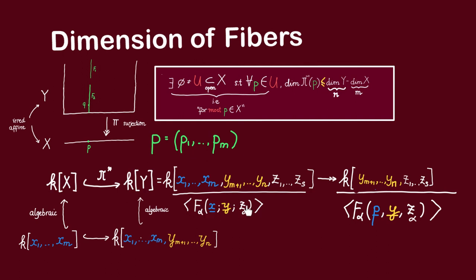For each z_alpha, we have an algebraic dependence relation relating z_alpha to the x_i's and y_j's. The problem is that when we plug in the point (p_1, …, p_m), this might no longer be a dependence relation between the y_j's and z_alpha — for example, if all the coefficients involving y_j cancel, leaving an expression containing only z_alpha. Note that since the y_j's are algebraically independent, we cannot have the other possibility where the coefficients of z_alpha cancel and give a relation among the y_j's. So as long as not all the coefficients of the y_j's cancel, we do have algebraic dependence of each z_alpha on the y_j's, and thus this ring cannot have more than n − m algebraically independent elements.